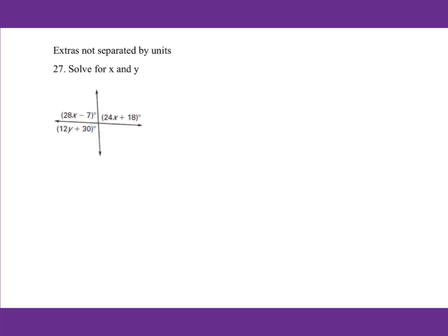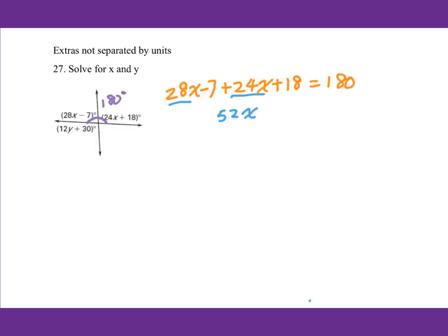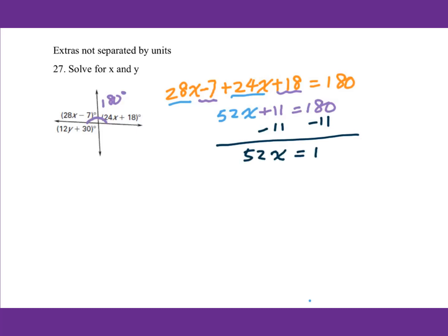For number 27, solve for X and Y. We know this is a straight angle of 180 degrees. Therefore, 28X minus 7 plus 24X plus 18 equals 180. Combine like terms: 52X plus 11 equals 180. Subtract 11 from both sides: 52X equals 169. Divide by 52: X equals 3.25.